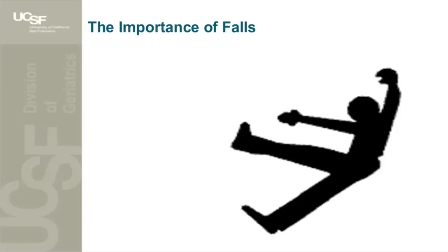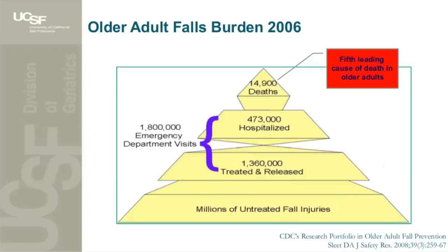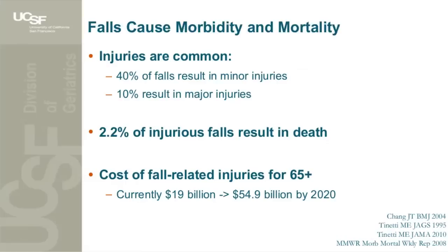Why should we care? Injuries are the fifth leading cause of death in older adults, and complications resulting from falls are the leading cause of death from injury — almost 15,000 deaths annually. But I also want to draw your attention to the bottom of the pyramid: millions of untreated fall injuries. There are many reasons falls go undetected — the patient may never mention the fall and the provider never asks, or there's an incorrect assumption that falls are just a normal part of aging, which is not true.